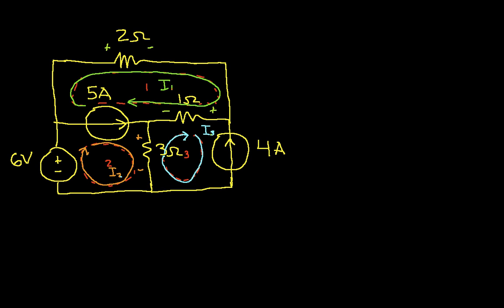So, let's look at this current source. I have going through the current source this direction, I1. I have going through the current source this direction, I2. And so, what this tells me then is I2 minus I1 has to be equal to 5 amps. Again, this current source is placing a constraint on the relationship between I1 and I2. So, that's one equation.